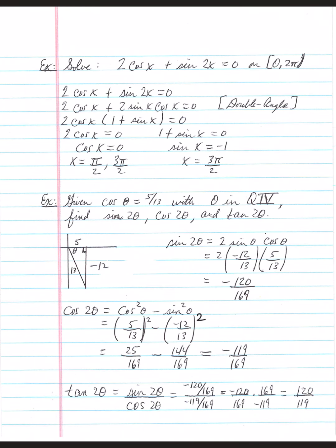5/13 squared = 25/169; (−12/13) squared = 144/169. Subtracting gives 25/169 − 144/169 = −119/169. For tangent(2θ), since we already have sine and cosine of the double angle, we can use the quotient identity: sine(2θ)/cosine(2θ) = (−120/169)/(−119/169). The 169s cancel; two negatives make a positive: 120/119.